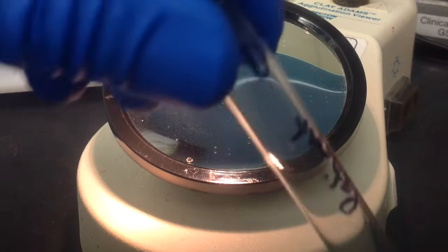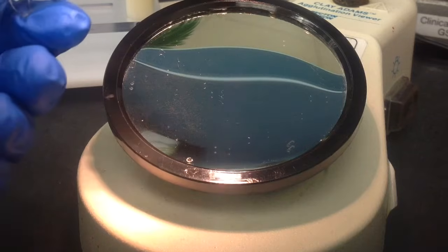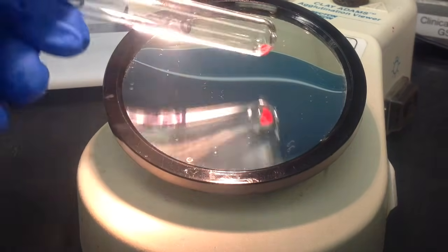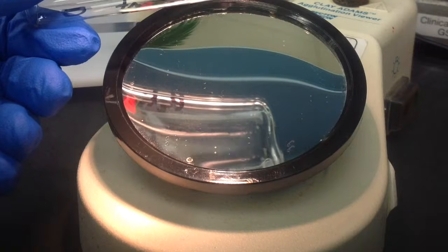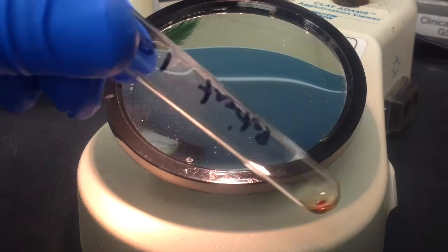And then moving on to the anti-D. Now, this is the first one we're going to get a positive with. You'll see that this has a 4-plus, really good cell button agglutination right there. And from that forward, you know this is an O-pos patient.